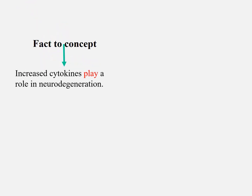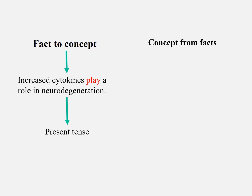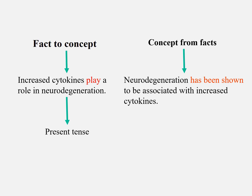If you write something from a fact to a concept, for example, 'increased cytokines play a role in neurodegeneration' — 'neurodegeneration' is the concept, and 'increased cytokines play a role' is the general fact, so you use the present tense. But if you want to present a concept that comes from a number of effects, for example, 'neurodegeneration has been shown to be associated with increased cytokines,' you will use the present perfect tense.